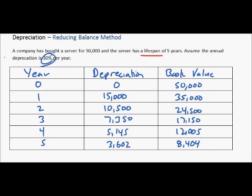There are a few important things to note. The $8,404 is our residual value — that is the amount the asset is worth once we have used it for the full five years. After five years we say, well, it's still worth this amount of money.